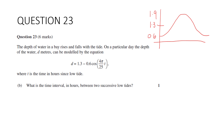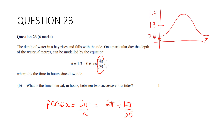Part B: what is the time interval in hours between two successive low tides? That's asking us the period. Recall that period equals 2π/n, and n is the coefficient of t. So it's going to be 2π divided by 4π/25, which equals 2π × 25/(4π). Cancelling gives 25/2, which is 12.5 hours.